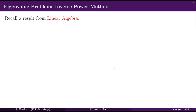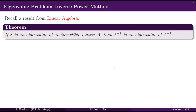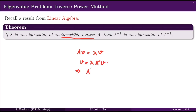The idea is very nice and interesting. It relies on the following well-known result from linear algebra: if lambda is an eigenvalue of an invertible matrix, then lambda inverse is an eigenvalue of A inverse. This is not very difficult to see. Suppose A·B equals lambda·B. Then you can multiply both sides by A inverse to get B equals lambda·A inverse·B. That implies A inverse·B equals (1/lambda)·B.